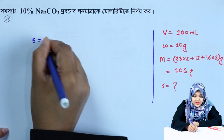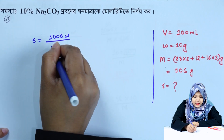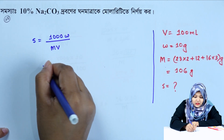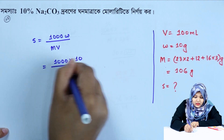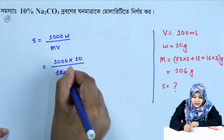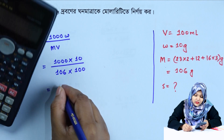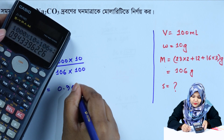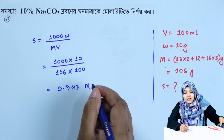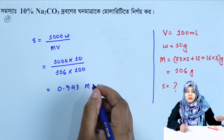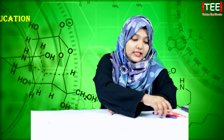Using the molarity formula S equals 1000 into W divided by M into V: W is 10, M is 106, V is 100. This gives 0.943 Molar. Therefore, 10 percent sodium carbonate solution is 0.943 Molar.